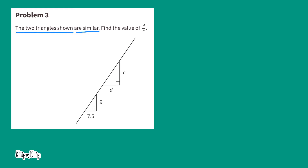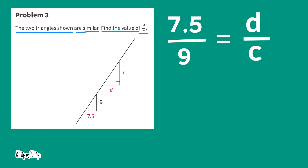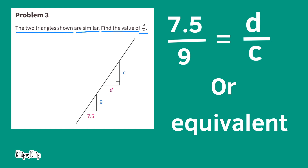Problem number 3. The two triangles shown are similar. Find the value of D over C, which is also known as D divided by C. Since the two triangles are similar, 7.5 divided by 9 will equal D divided by C. And 7.5 divided by 9 is equivalent to 5 sixths. So D over C equals 5 sixths, or equivalently 7.5 over 9 or 15 over 18.